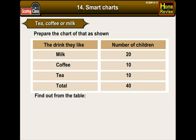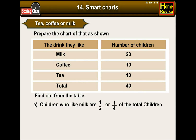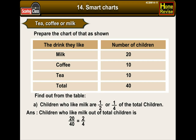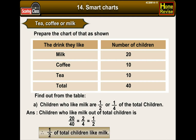Find out from the table. A. Children who like milk — are they half or one-fourth of the total children? Children who like milk out of total children is 20/40, which is 2/4, which is 1/2. Therefore, half of total children like milk.